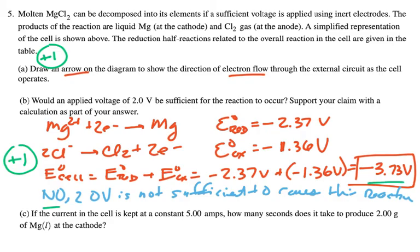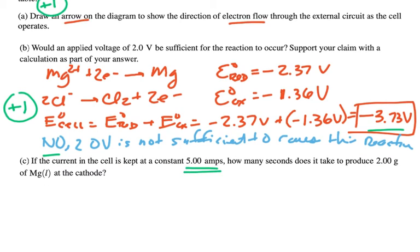Now part C: If the current in the cell is kept at a constant five amps, how many seconds does it take to produce two grams of magnesium liquid at the cathode? What is five amps? An amp is how many coulombs per second runs through the circuit, so five amps means that there are five coulombs per second, so we might need that conversion factor.